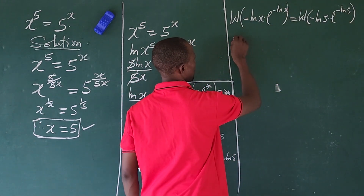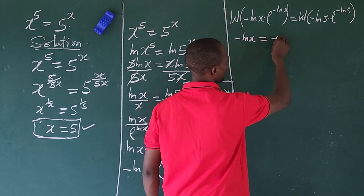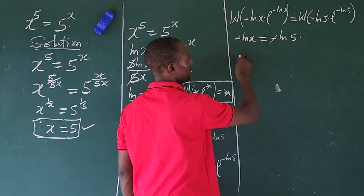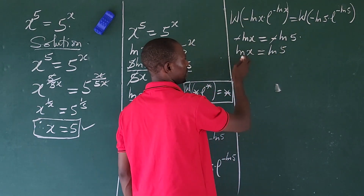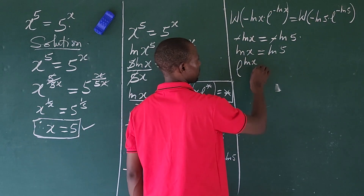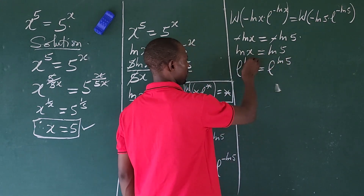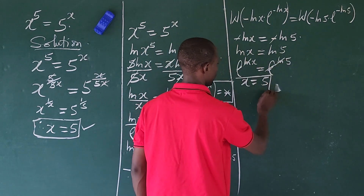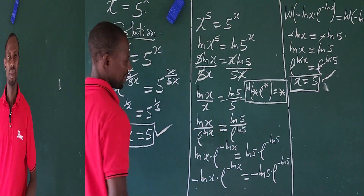This gives us automatically: minus ln(x) equals minus ln(5). The negatives cancel, leaving ln(x) equals ln(5). Raising both sides as exponents of e: e to the power of ln(x) equals e to the power of ln(5), and those cancel to give x equals 5. So we have x equal to 5, the same answer as before.